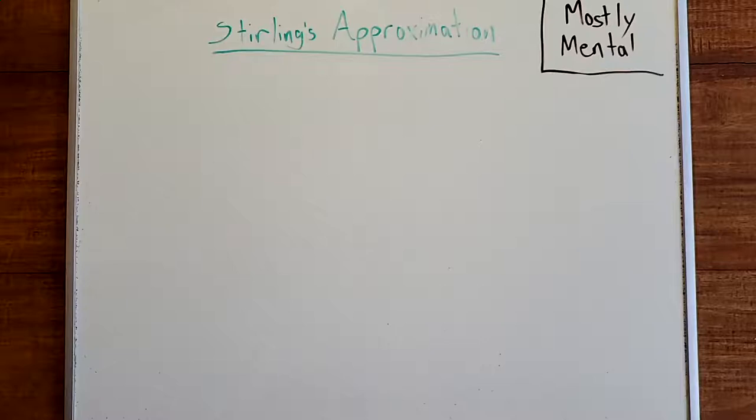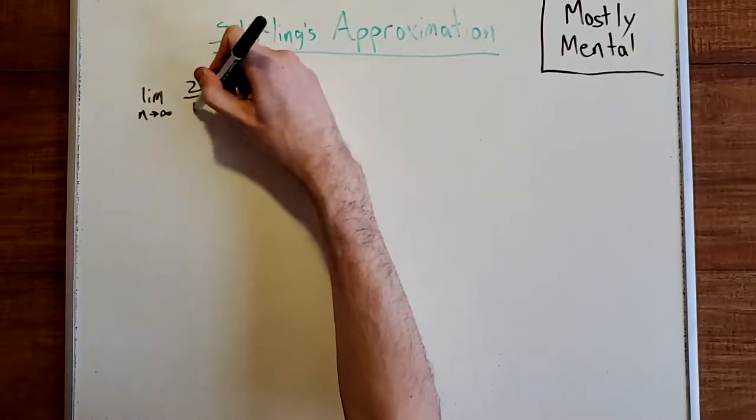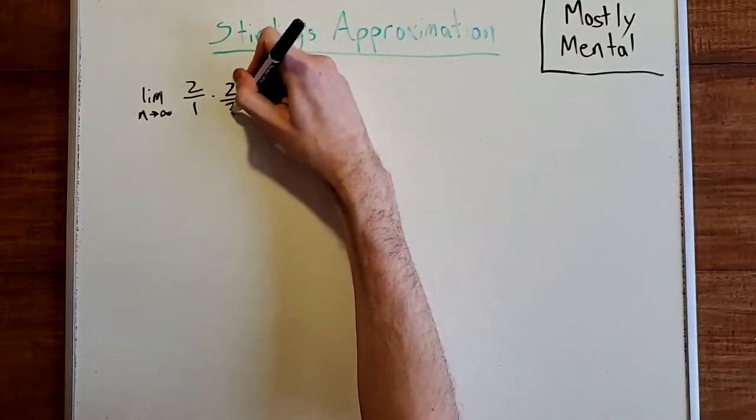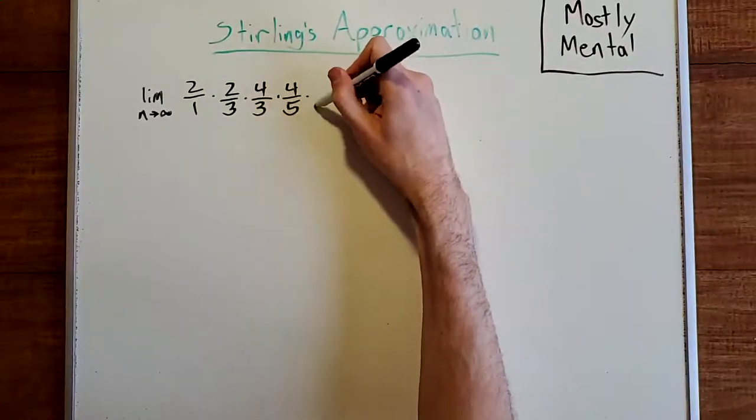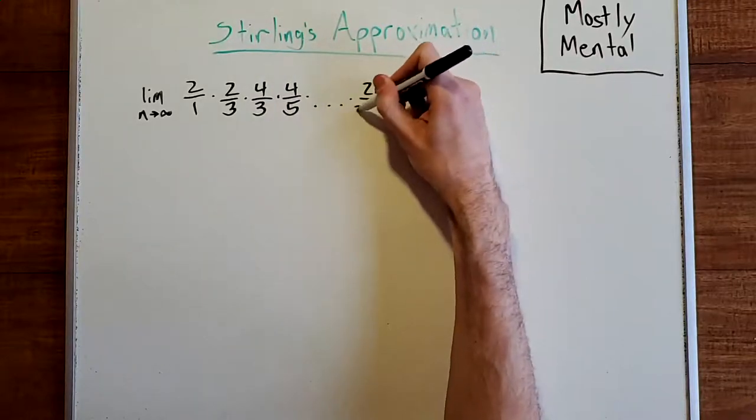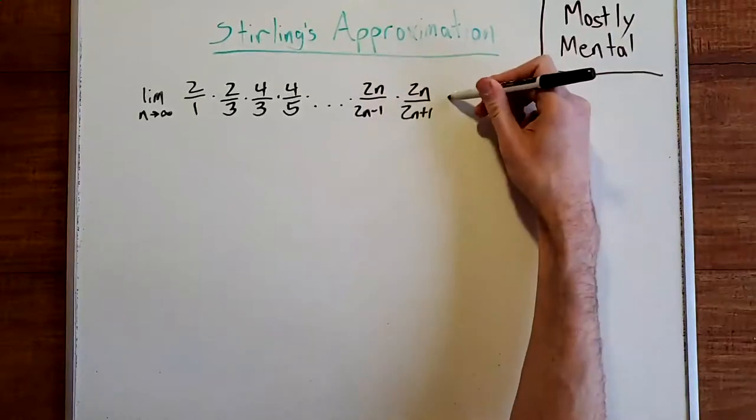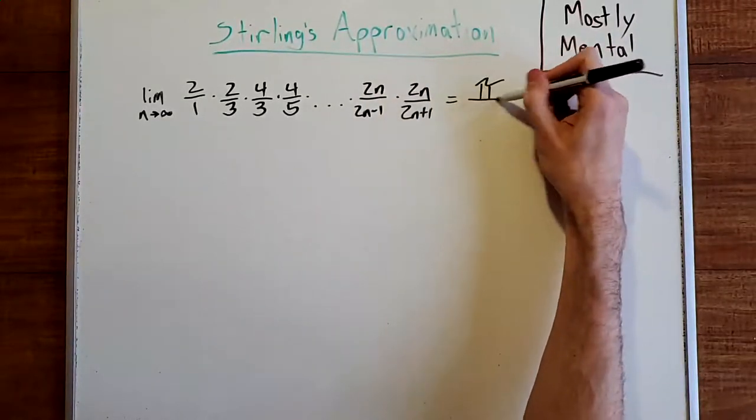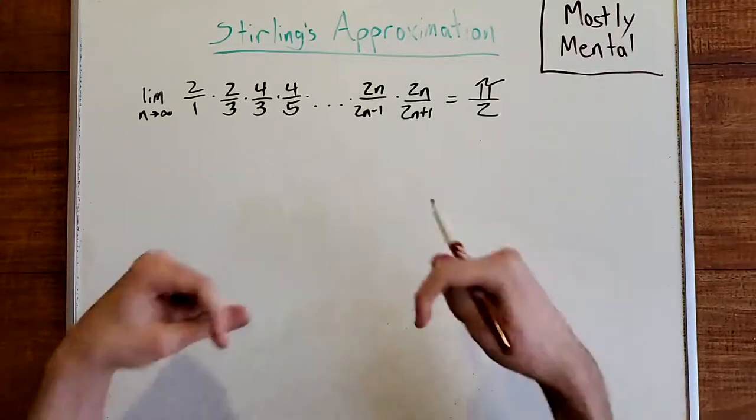To get that, we'll need to use a result known as Wallace's formula. That is, the limit as n approaches infinity of 2 over 1 times 2 over 3 times 4 over 3 times 4 over 5 times so on and so forth up to 2n over 2n minus 1 times 2n over 2n plus 1 is equal to pi over 2. Now, I won't prove that result here, but both 3blue1brown and Mythologer have great videos on the subject, so I'll link those below.